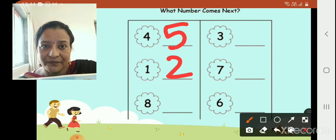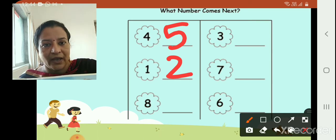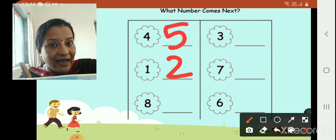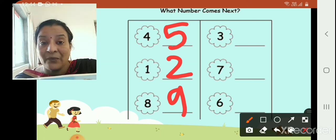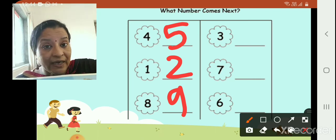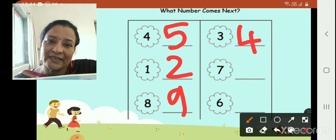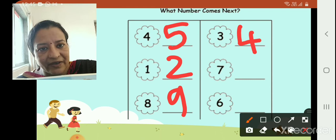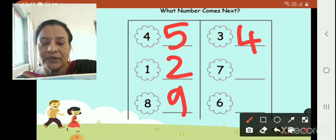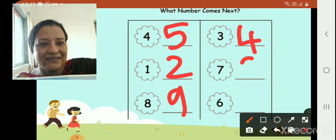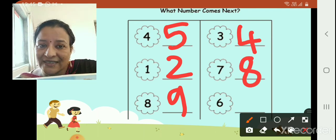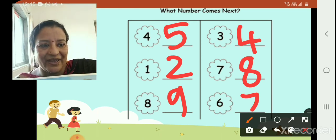Now, what comes after 8? Let us say the numbers. 1, 2, 3, 4, 5, 6, 7, 8 and 9. So after 8, it is 9. What comes after 3? 1, 2, 3, 4. So we write 4. Now you tell me what comes after 7. Say the numbers. 1, 2, 3, 4, 5, 6, 7, 8. So we write here 8. And after 6? 7. Very good. So these are after numbers.